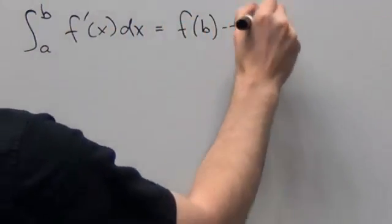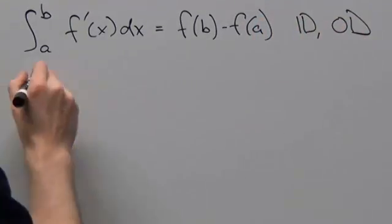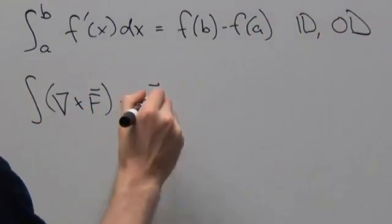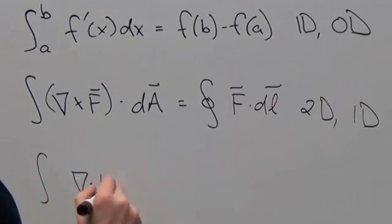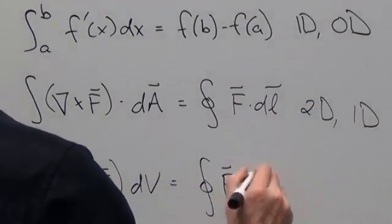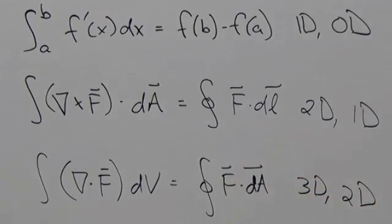we have the fundamental theorem of calculus, which involves a 1D domain with zero-dimensional, or point, boundaries. We have Stokes' theorem, which involves a 2D domain with a 1D boundary. And we have the divergence theorem, which involves a 3D domain with a 2D boundary.